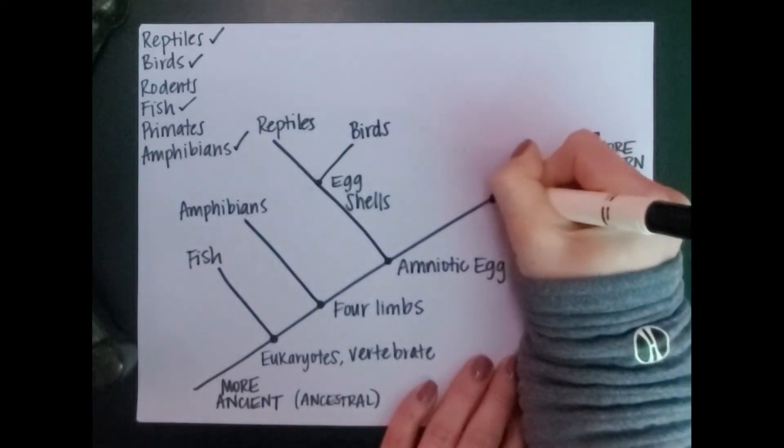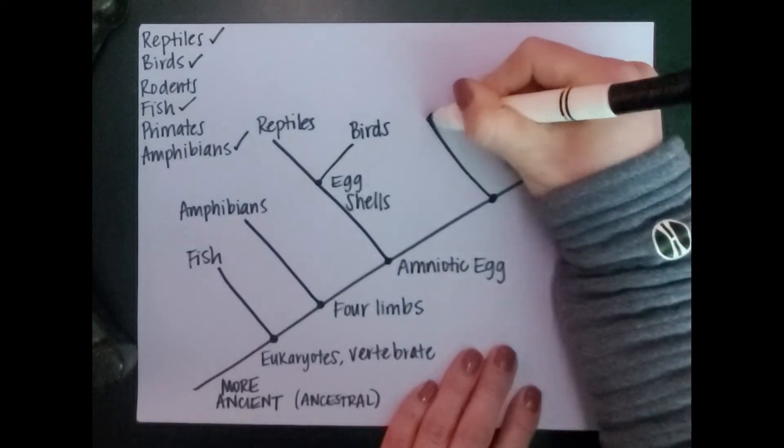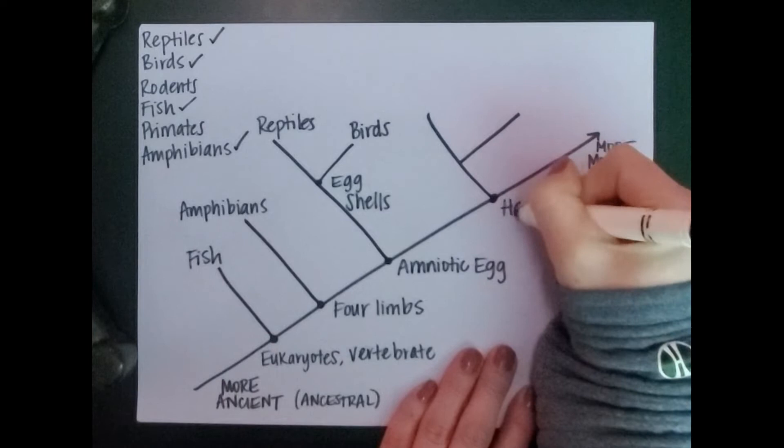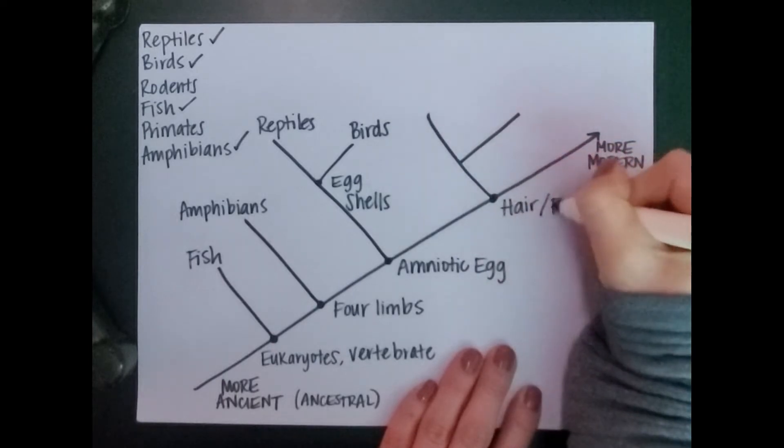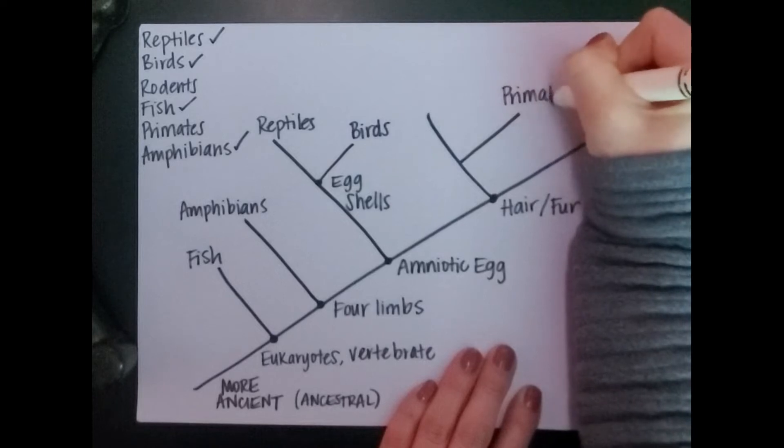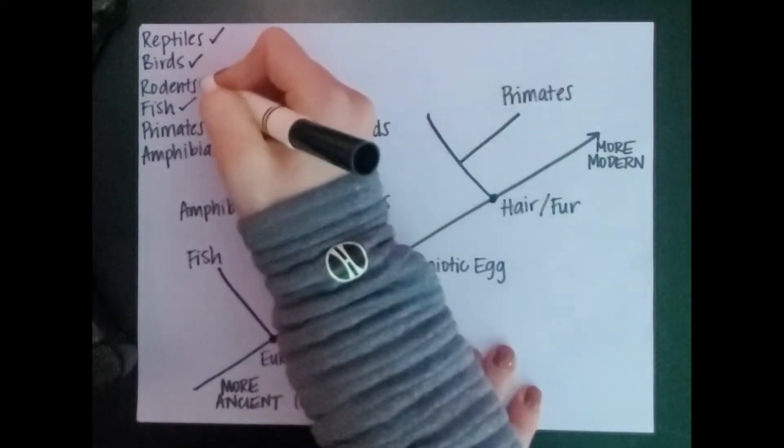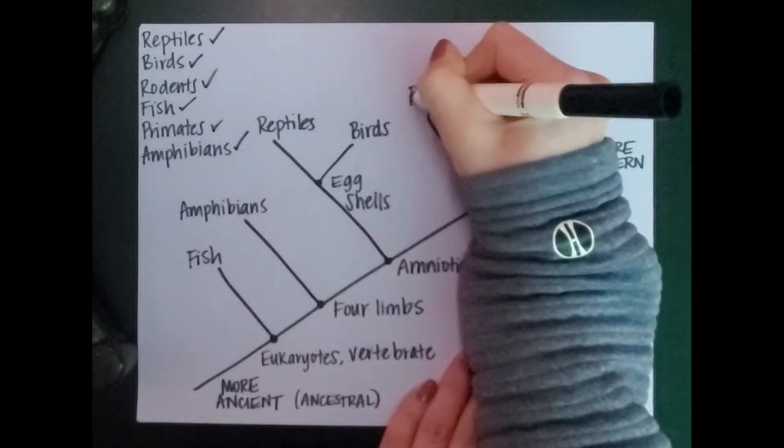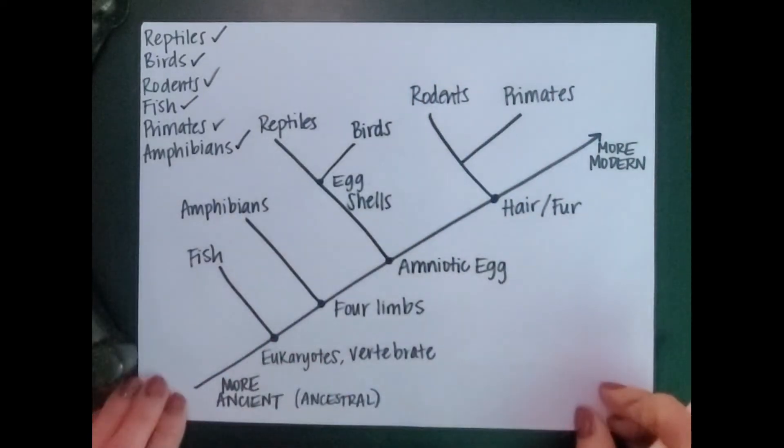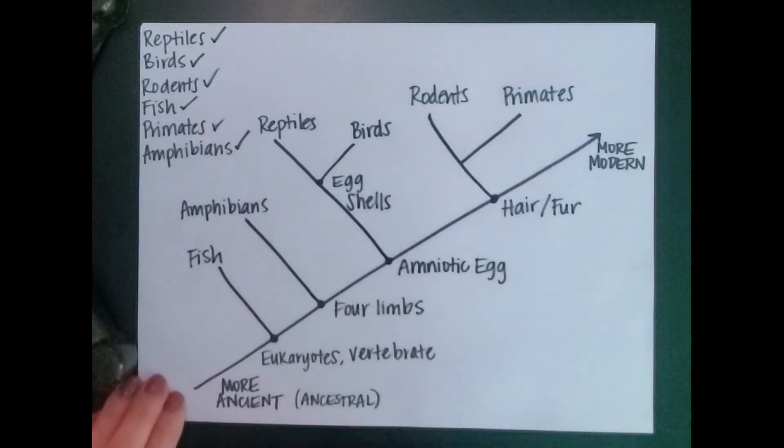And then our last characteristic that will help us split our final two categories here are organisms that have hair or fur. And those would be our primates and our rodents. So we've gotten more and more specific as we've gone along here.